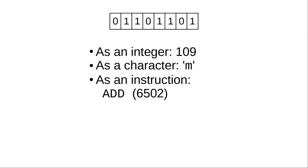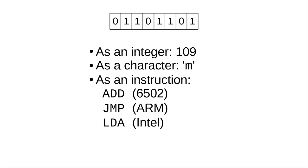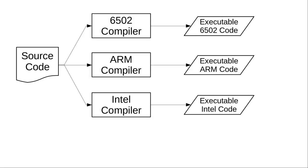Each pattern of bits is a different instruction to the CPU. This is called the CPU's instruction set. Every different type of CPU has a different instruction set or architecture. That means this pattern of bits, which is an add on a 6502, might mean jump to a different part of the program on an ARM processor, or load an accumulator on an Intel processor. When we write a program in a high-level language, it has to be translated into the bits and bytes for the CPU that's going to run the program. That translation process is called compiling, and for most languages you need a different compiler for every architecture.